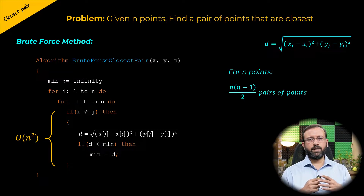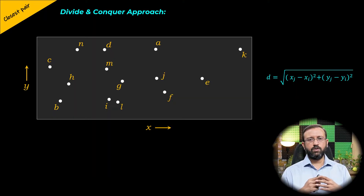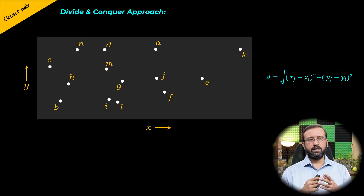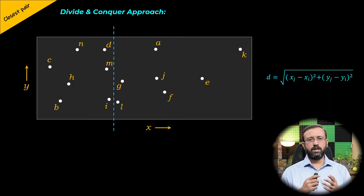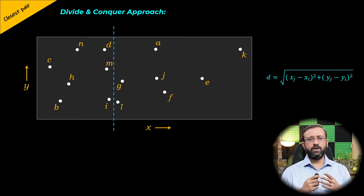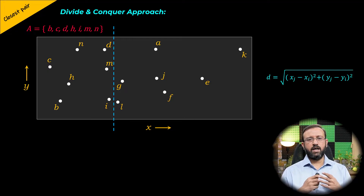We can achieve better performance by applying the divide and conquer approach, where we do not need to check every possible pair. Using this method, we divide the large set of points into two partitions. Since this is a geometric problem, we consider division based on x-coordinates. We compute the median of the x-coordinate and divide the points accordingly. The blue dotted line represents the median, and we assume both partitions have roughly equal numbers of points. Points to the left form partition A, and points to the right form partition B.